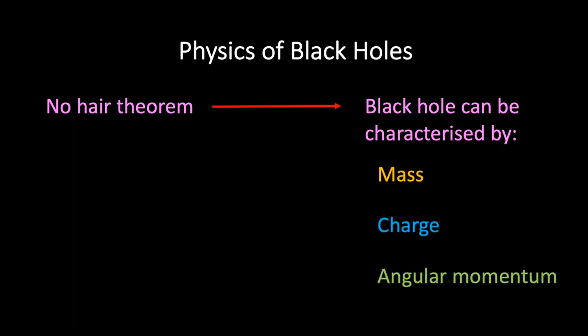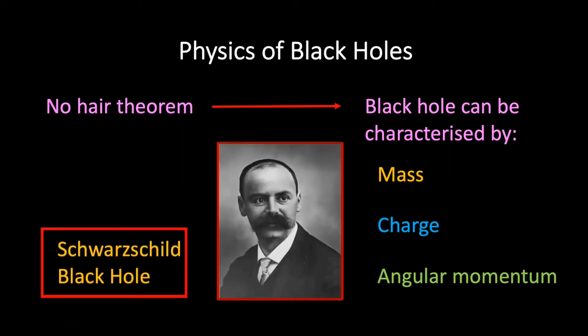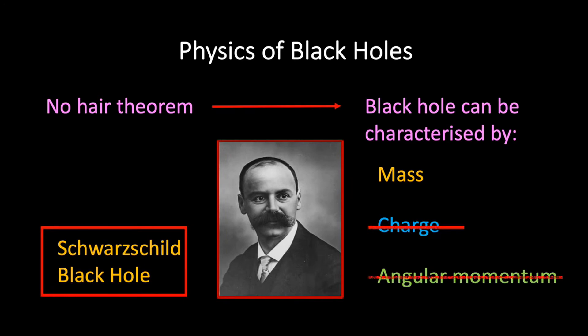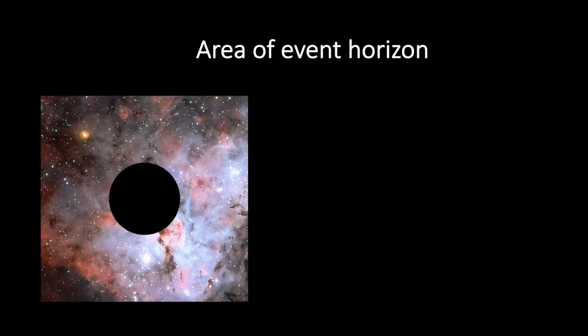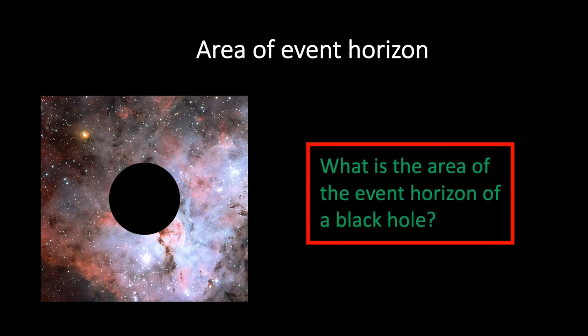All other information, for which hair is a metaphor, about the matter that formed the black hole disappears behind the black hole event horizon and is therefore permanently inaccessible to external observers. In what follows, we will focus on a special class of black holes known as Schwarzschild black holes, which have neither electric charge nor angular momentum. Therefore, a Schwarzschild black hole is completely characterized by its mass. Armed with the no-hair theorem and dimensional analysis, we are now in a position to answer the following question: what is the area of the event horizon of a black hole?